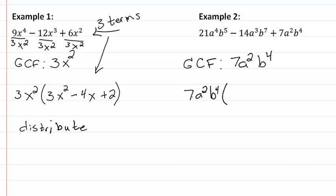Twenty-one divided by seven is three. A to the fourth divided by a squared, a squared. B to the fifth divided by b to the fourth is b. Now we have a minus sign, so I'm just writing that down. Fourteen divided by seven is two. A cubed divided by a squared is a. B to the seventh divided by b to the fourth is b cubed.